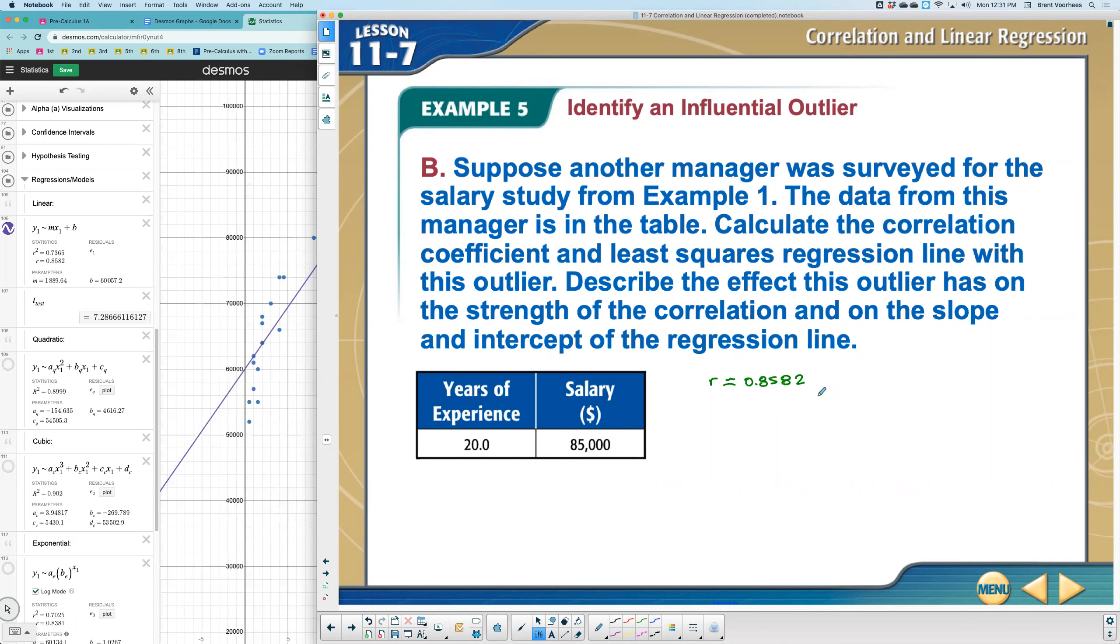And you can see this is not as accurate as it was before. There's the correlation coefficient and the least squares regression line. That is this equation here. So we usually write it as y hat would equal the slope, now is 1,889.64 x plus the y intercept is $60,057.20.